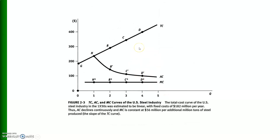This is another schedule showing total cost, average cost, and marginal cost curves of the US steel industry. The total cost is a straight line here, and this is the average cost, and this is the marginal cost. The marginal cost curve is horizontal and parallel to the X-axis because the total cost is a straight line — its slope is constant — meaning MC is constant and does not vary with the level of output.